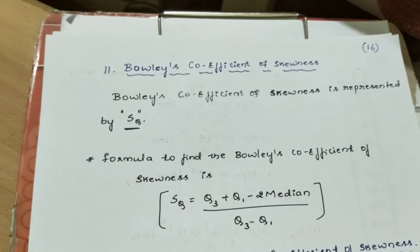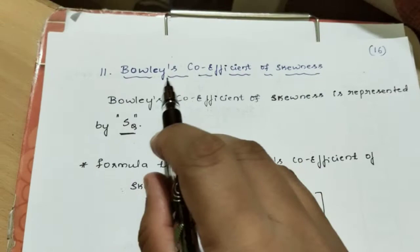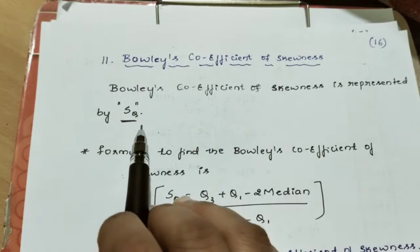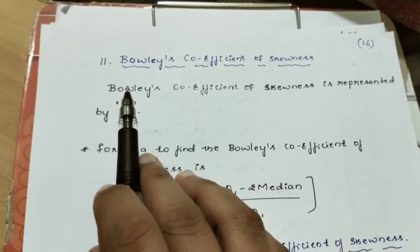One of the measures is called Carl Pearson's coefficient of skewness, and this one here is Bowley's coefficient of skewness. We are discussing the SQ symbol, so SQ is equal to this formula.